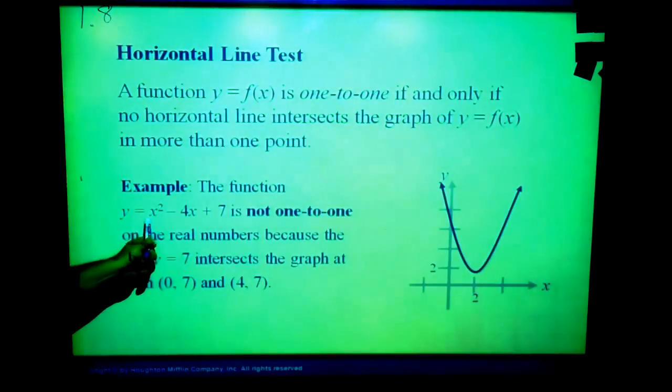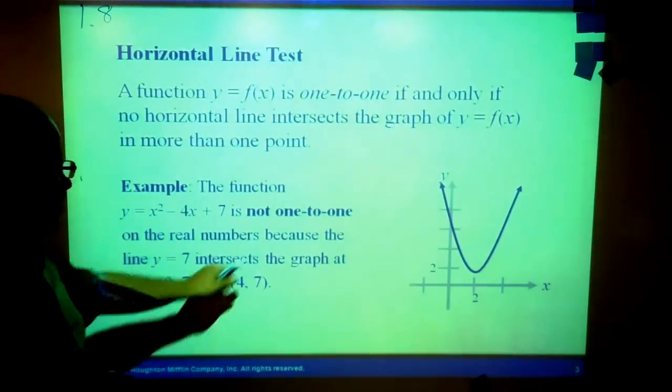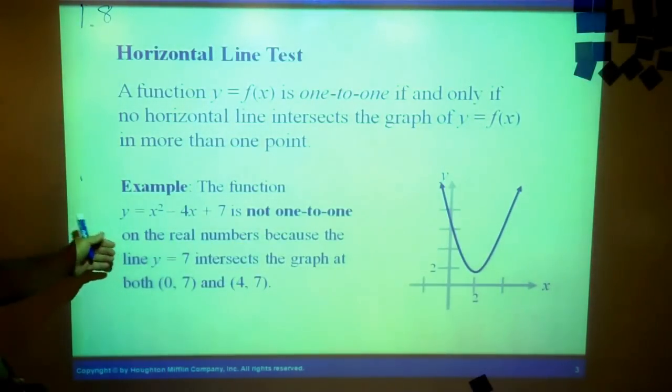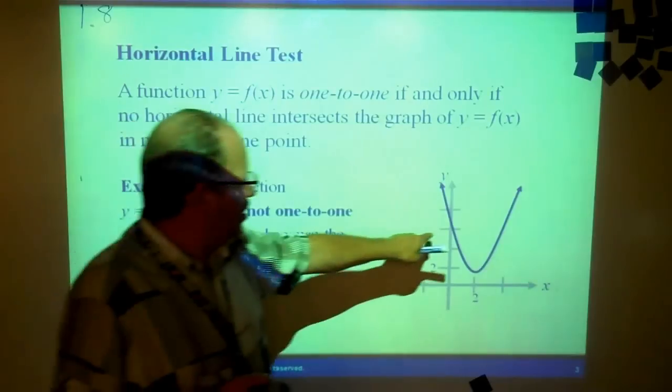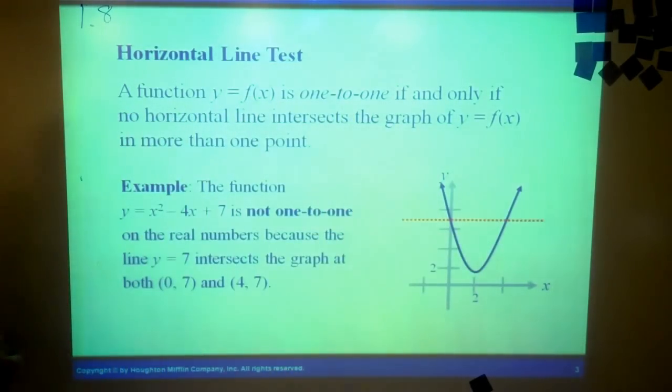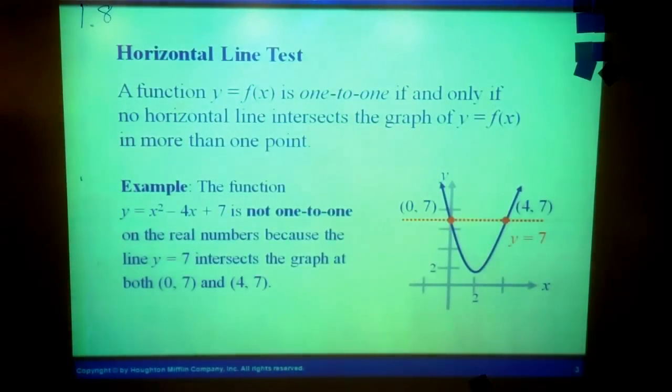Example: y equals x squared minus 4x plus 7. It's not one-to-one because the horizontal line is going to cross it more than one place.